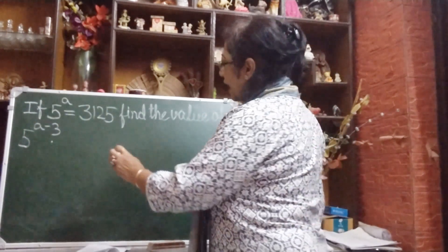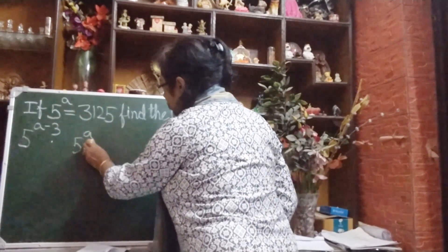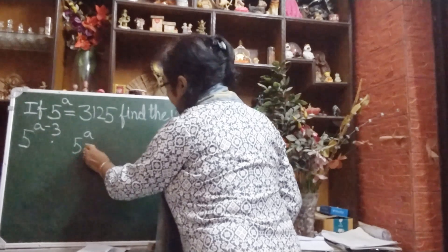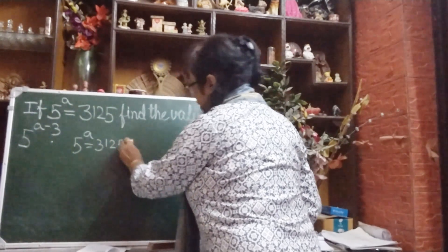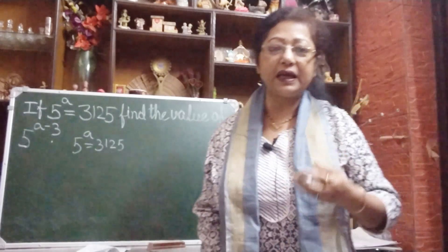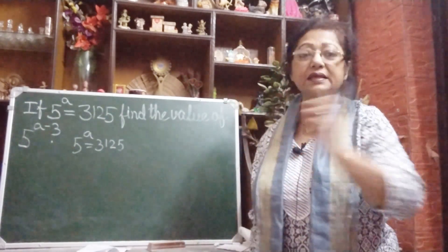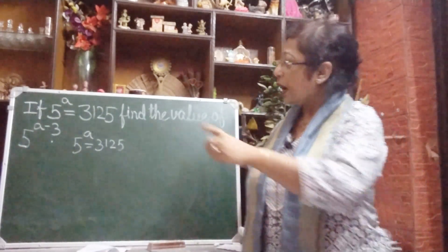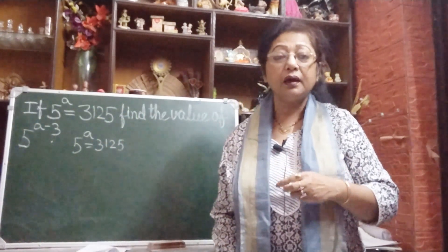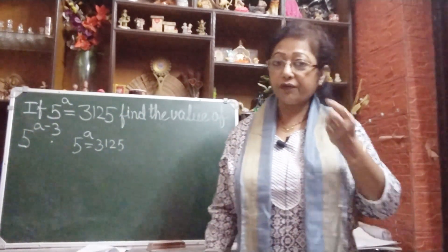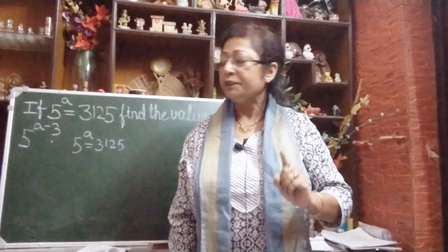Now, see — 5 to the power a. What is given? It is given that 5 to the power a equals 3125. Our target is we have to make the bases same, because we have to find out 5 to the power a minus 3. So we have to know the value of a right now.